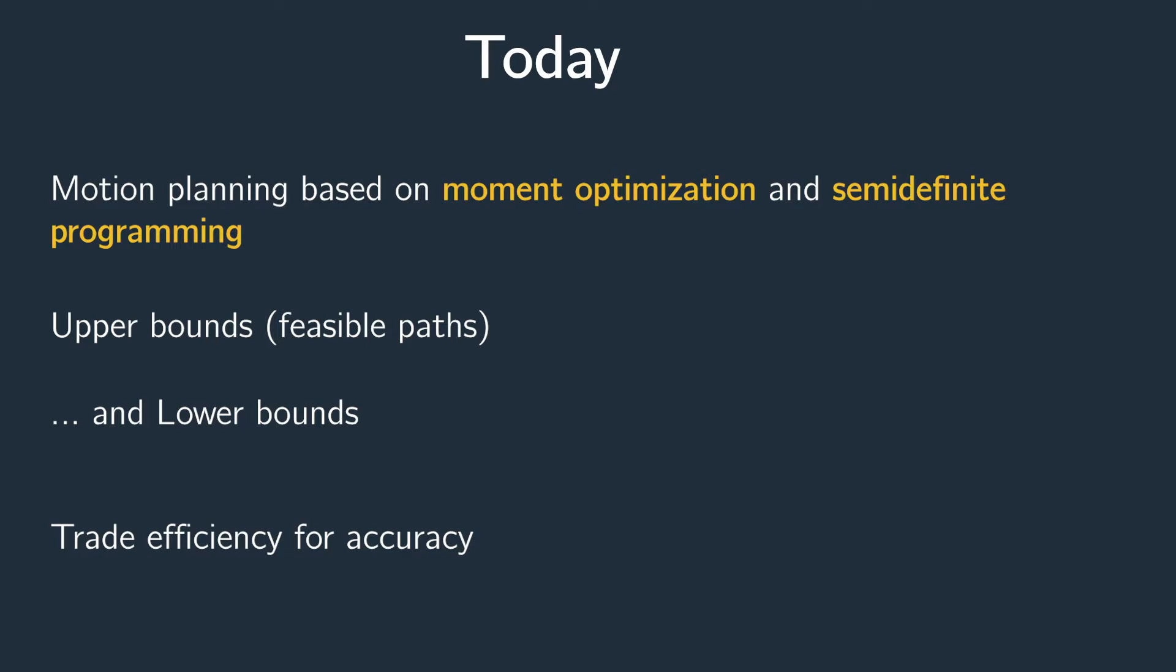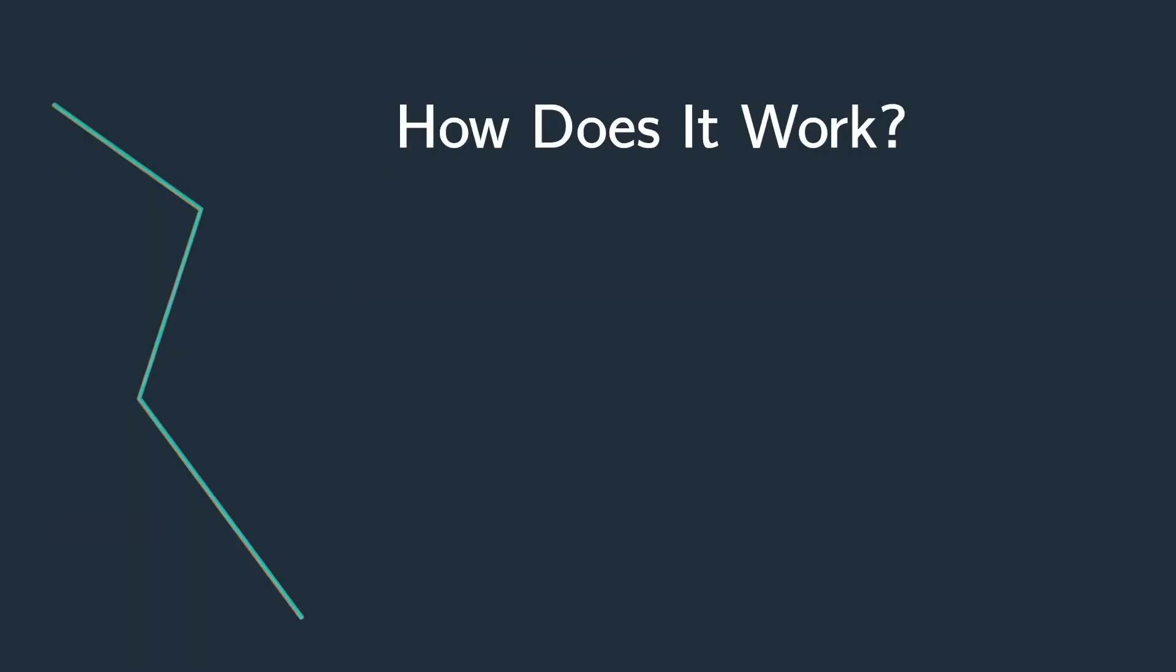On the other hand, if you let R go to infinity, the running time of the algorithm will increase. But the upper bound and lower bound that you get will converge to each other, meaning that the path that the algorithm gives you will be optimal.